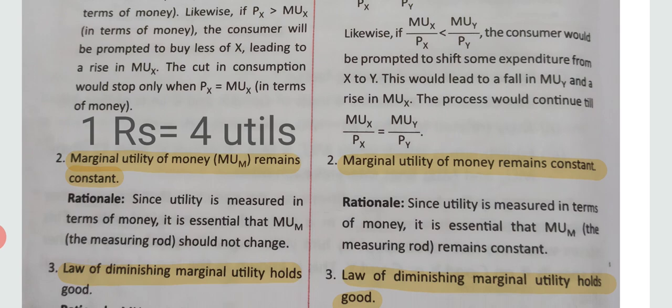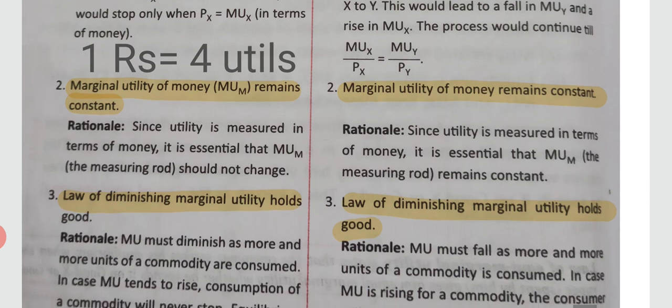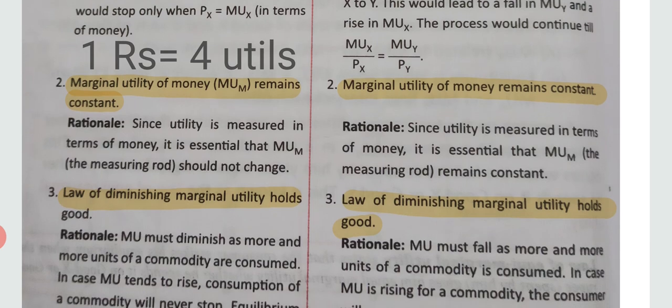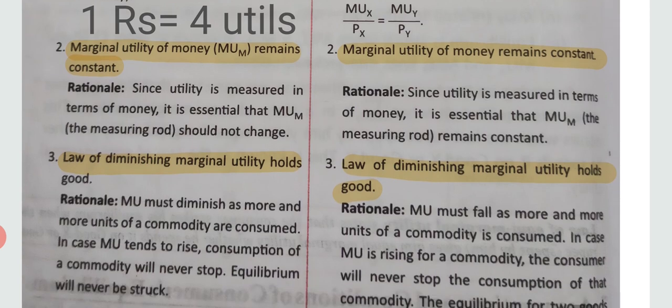The second condition for two commodities is that the marginal utility of money remains constant — for example, one rupee equals four utiles. The third condition is that the law of diminishing marginal utility holds good: as you consume more and more of a commodity, the marginal utility derived from consumption will start declining.